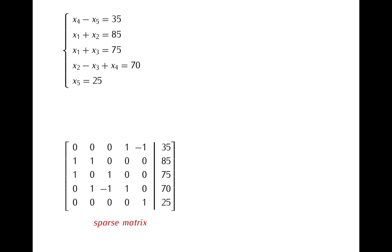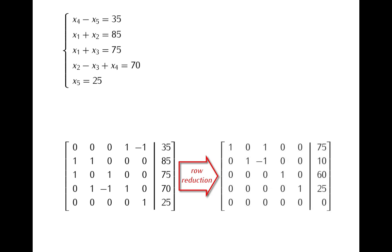In any case in order to solve our system we need to perform a row reduction of this matrix. And as you can check as the result of row reduction we obtain this matrix in reduced echelon form.